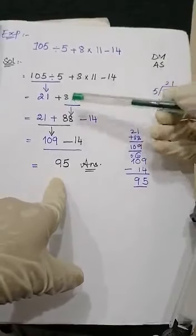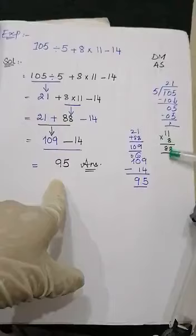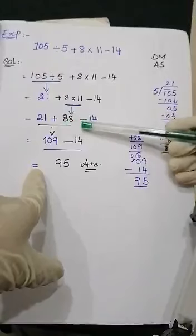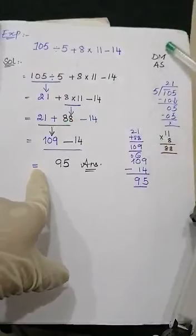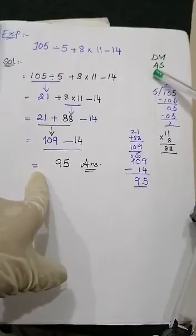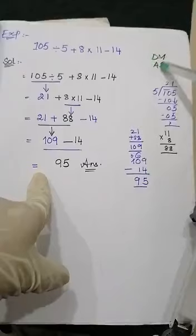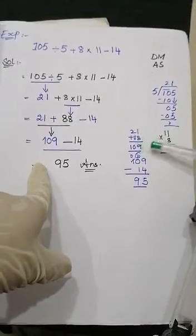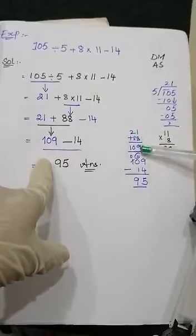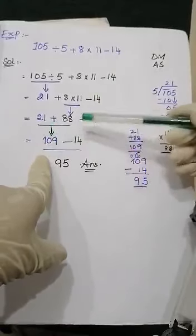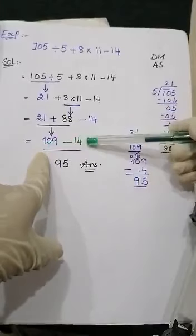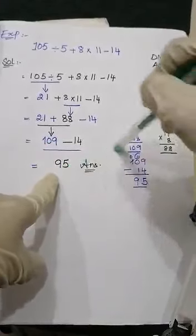Next step, multiplication: 8 multiplied by 11 equals 88. So we have 21 plus 88, minus 14. Now the addition step: 21 plus 88 equals 109. Then the subtraction step: 109 minus 14 equals 95. So the final answer is 95.